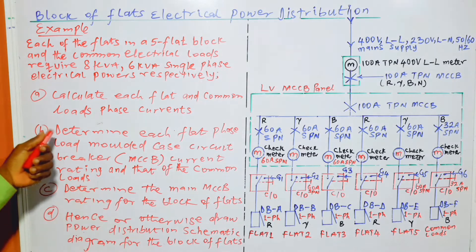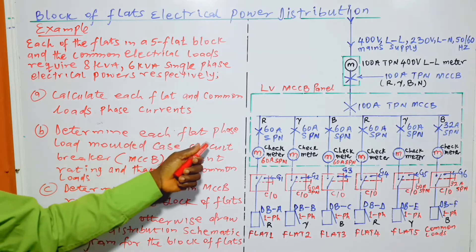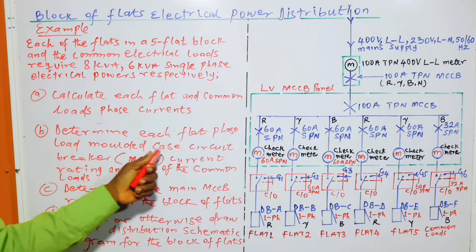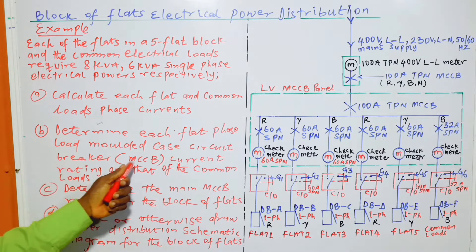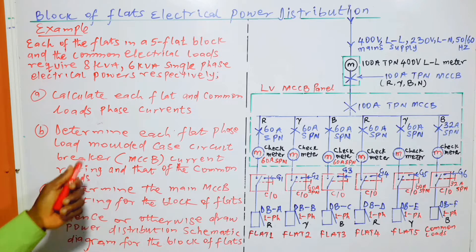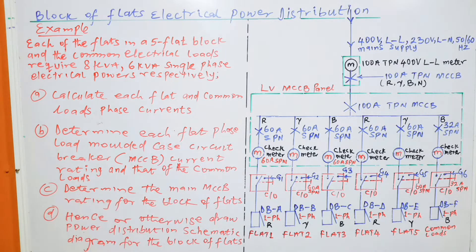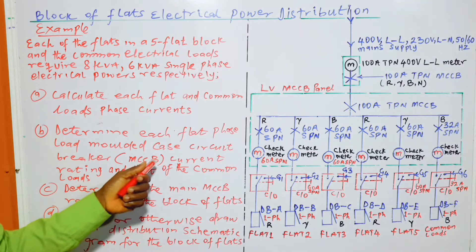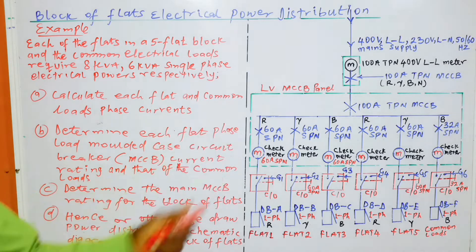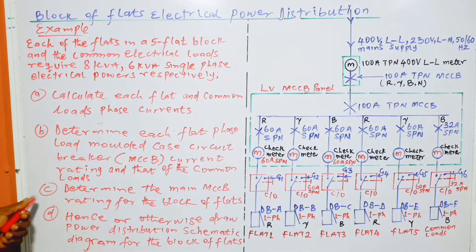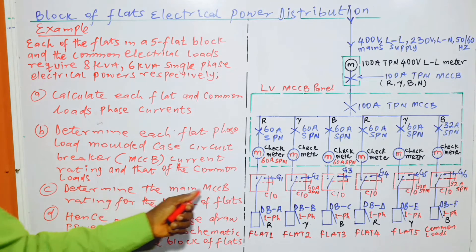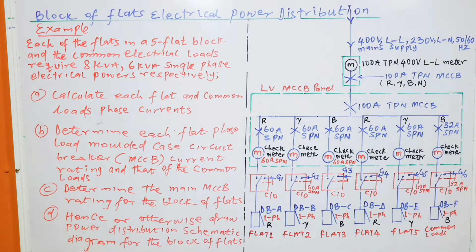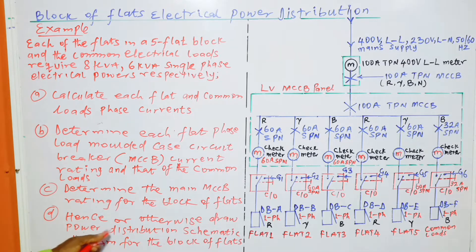Question A: calculate each flat's and common load's phase current. B: determine each flat's phase load MCCB current rating and that of the common loads. C: determine the main MCCB rating for the block of flats. D: draw the power distribution schematic diagram for the block of flats.